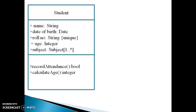The third compartment shows the operation declaration section. The hash indicates that the recordAttendance method is a protected method whose return type is Boolean, meaning it returns only true or false. The calculateAge attribute is of public type and whose return type is Integer.